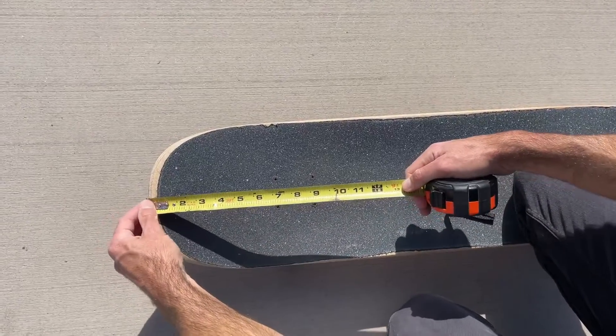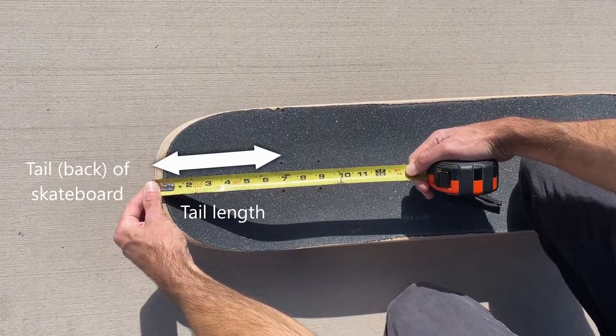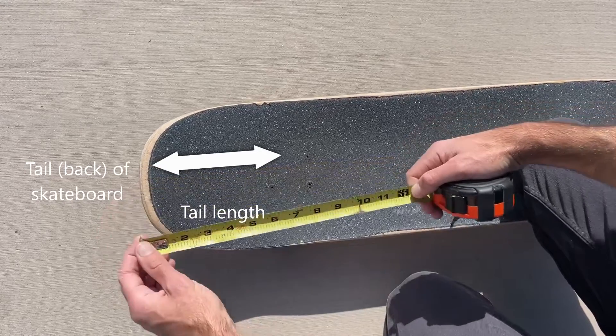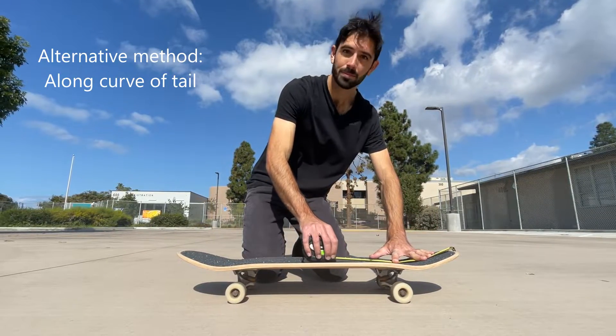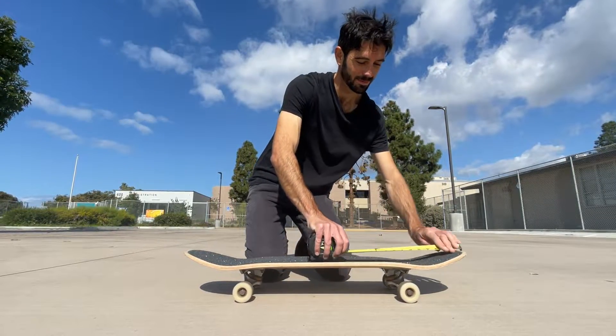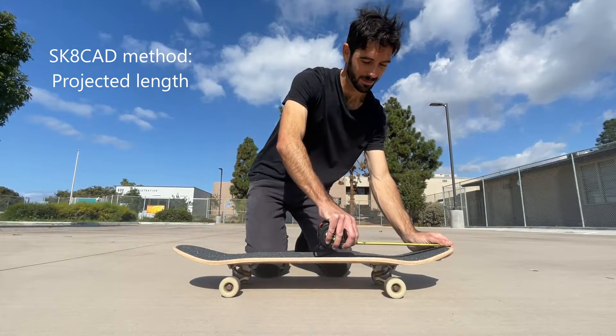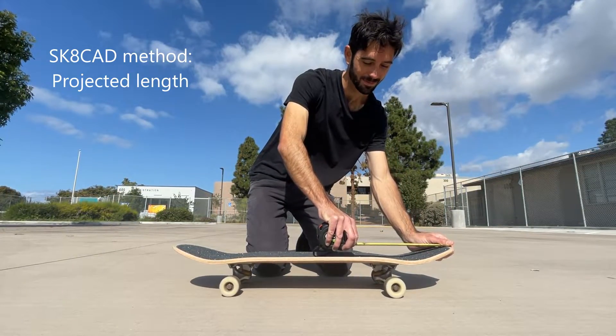Tail length describes how long your board is behind your rear trucks. More specifically, tail length is the projected distance from the tip of the tail to the centers of the truck holes closest to the tail. Some people measure this along the curve of the tail, but we use the projected view in Skate CAD.